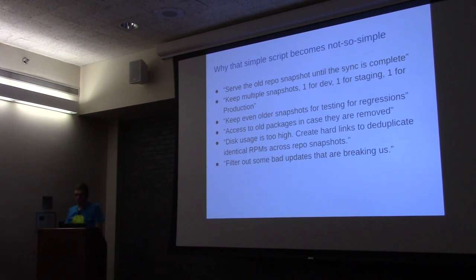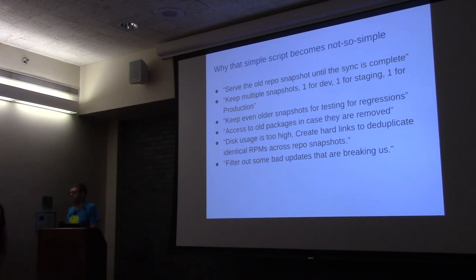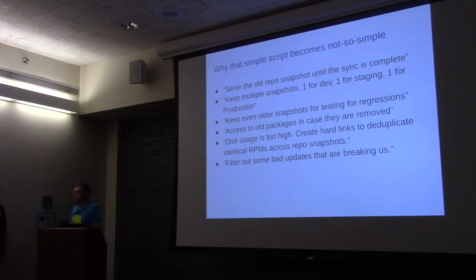Your script is getting more complex. Then you realize you need to keep access to old snapshots — for example, if you ran into a bug only occurring on recent versions, but the nominal version from six months ago is already out of production. So you start having folders on disk labeled dev, staging, production, with siblings based on timestamps of when you synced. Then if each snapshot is 50 gigabytes and you have 20 versions, you're using a terabyte of space. So you want to deduplicate identical RPM files, probably using a cron script that looks for identical files and hard-links them.